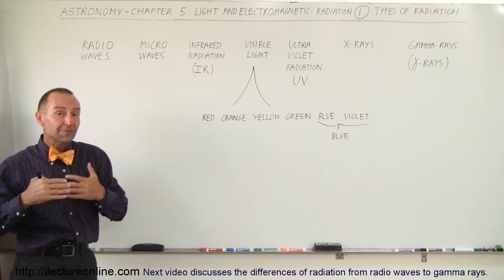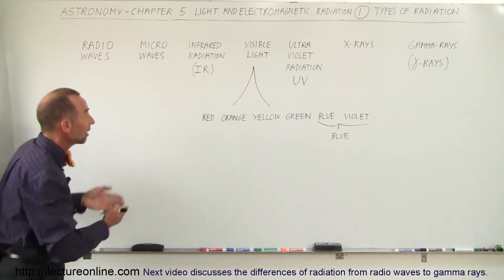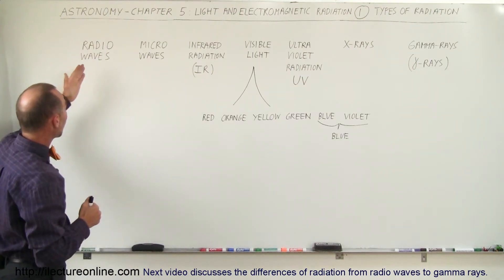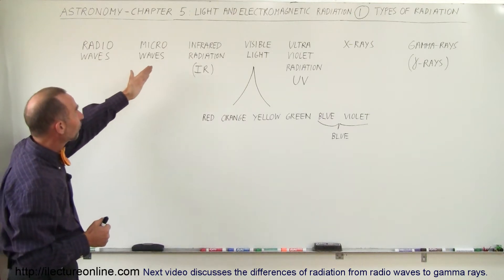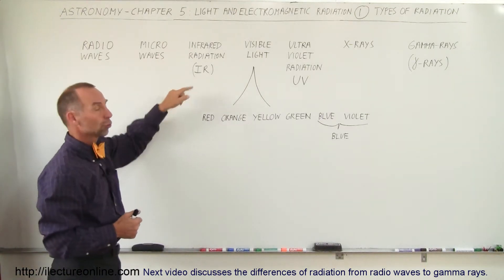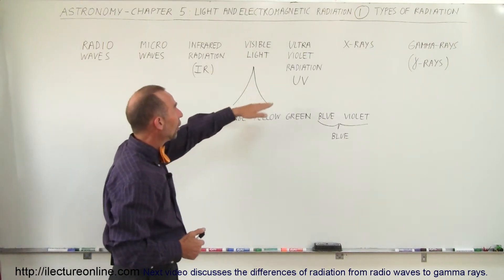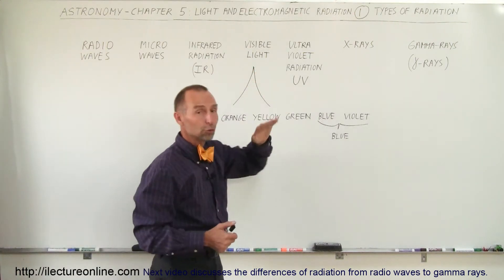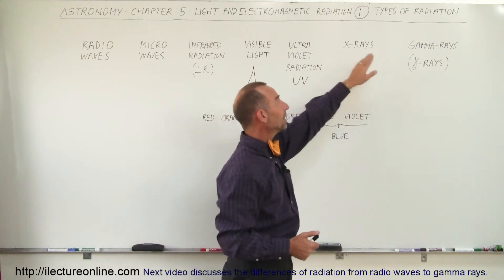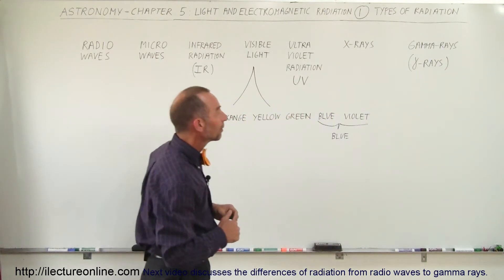So if you want to look at all the different types of electromagnetic radiation, I've written them down right here, starting with radio waves. We have microwaves, we have infrared radiation, for short we use IR, visible light, ultraviolet radiation, we call it UV, X-rays and gamma rays.